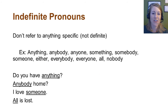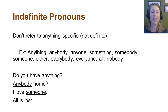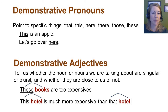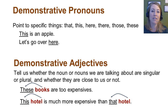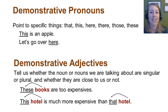Indefinite pronouns don't refer to anything specific — they don't refer to a specific quantity or amount: anything, anybody, anyone, everybody, everyone. In sentences: Do you have anything? Anybody home? I love someone. All is lost. These are all examples of indefinite pronouns. This is going to be the last set of pronouns we look at — demonstrative pronouns. Much like possessive pronouns and possessive adjectives, we also have demonstrative adjectives, and we need to be careful to distinguish whether a demonstrative word is a pronoun or an adjective in the sentence, because that's a whole different part of speech.